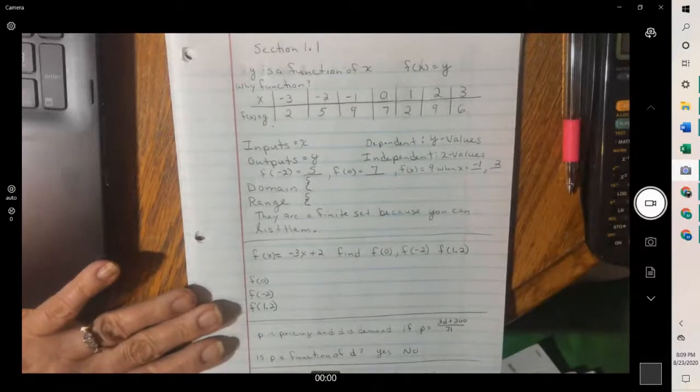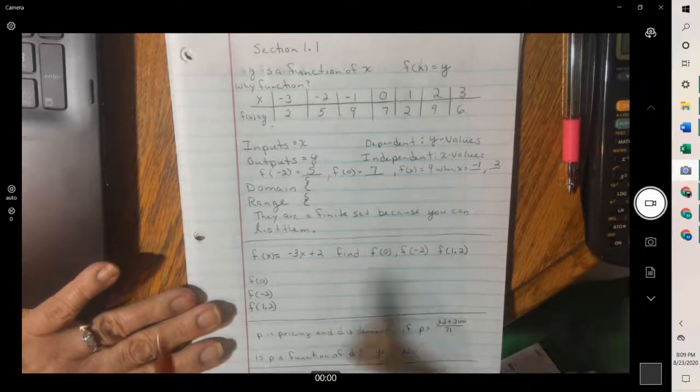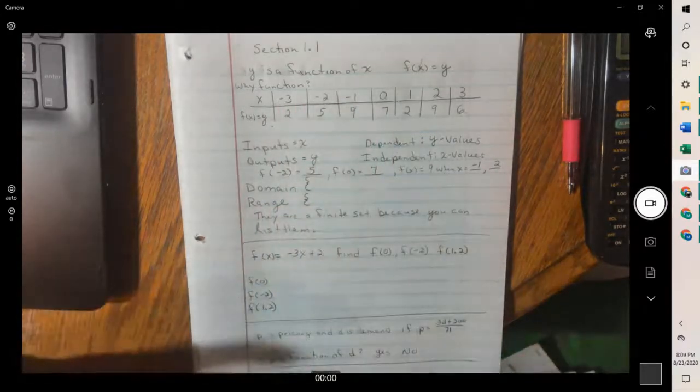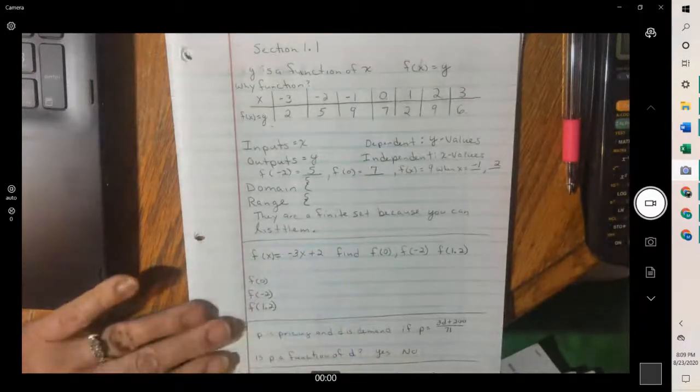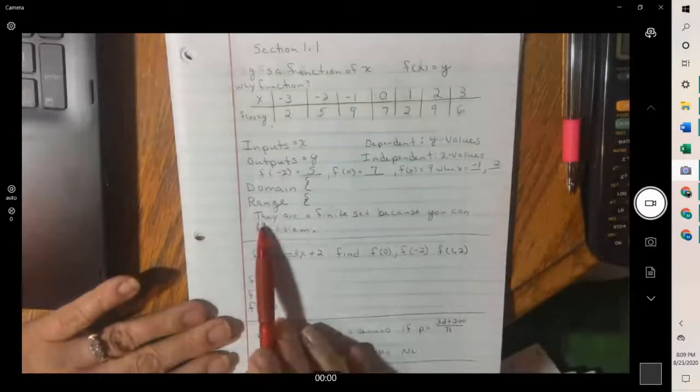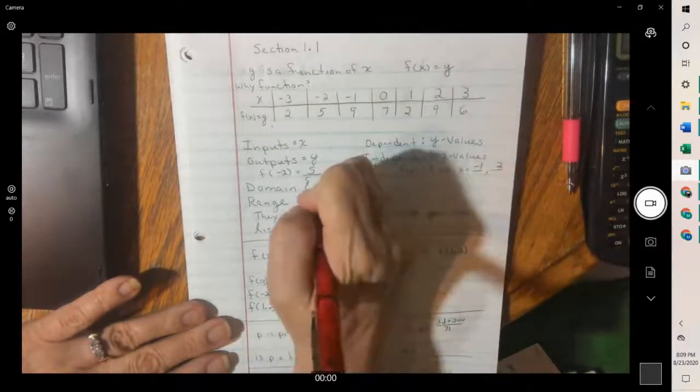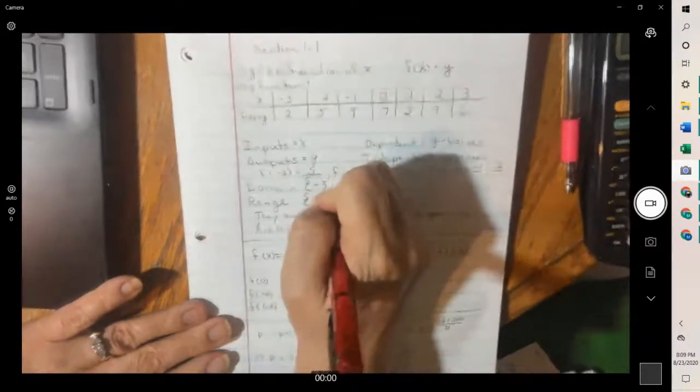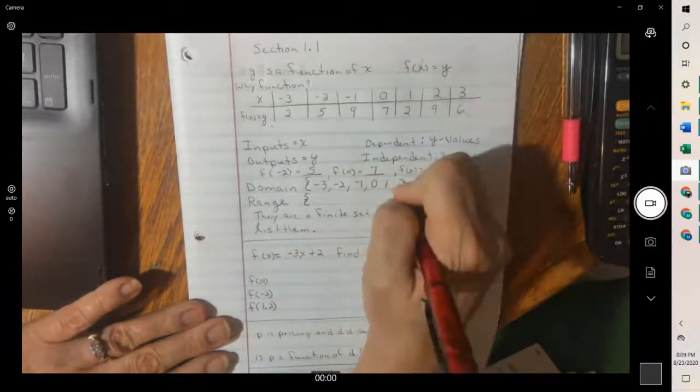The domain is always your inputs or your x values. And since you could count them, it's not five through ten with all the decimals in between. It's a list of numbers. That means it's finite. But for the domain, you would list them negative three, negative two, negative one, zero, one, two, and three.